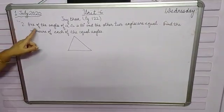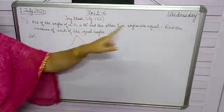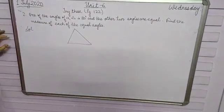Second question is: One of the angles of a triangle is 80 degrees and the other two angles are equal. Find the measure of each of the equal angles.